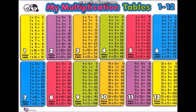12 times 7 is 84, 12 times 8 is 96, 12 times 9 is 108, 12 times 10 is 120, 12 times 11 is 132, 12 times 12 is 144.